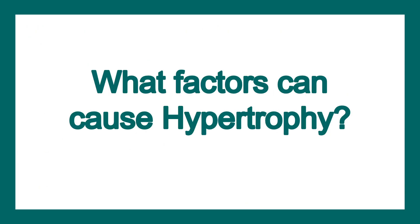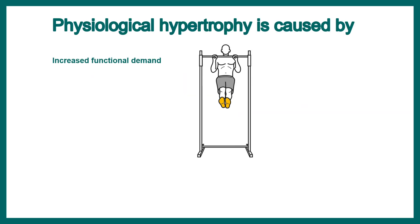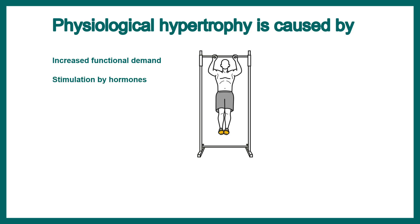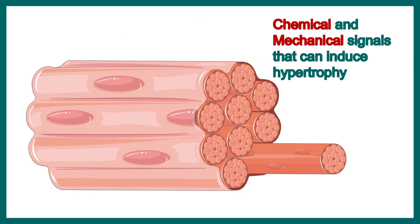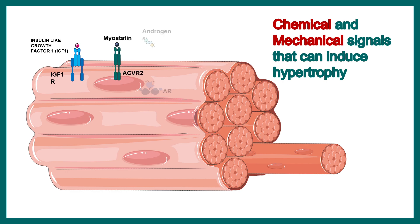What factors can cause hypertrophy? The overall physical demand is one key factor. It can also be stimulated by hormones such as steroid hormones — bodybuilders are often seen taking steroids. It can also be induced by several growth factors and growth hormones. There are chemical and mechanical signals that can induce hypertrophy; receptors on muscle interpret these signals. Insulin-like growth factor receptor 1 (IGF-1R) is one of the key players, along with myostatin, androgen receptors, and osteocalcin.